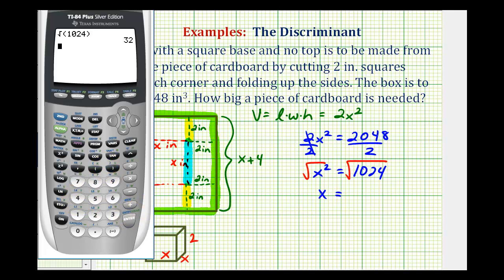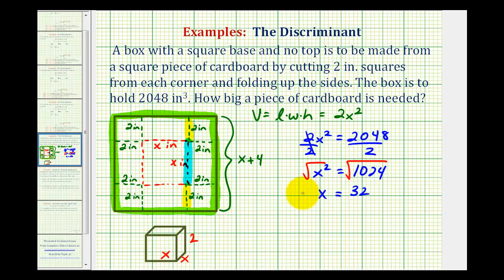So x is equal to 32. If x is equal to 32, or 32 inches, then the dimensions of the piece of cardboard would be 32 plus 4, or 36 inches by 36 inches.